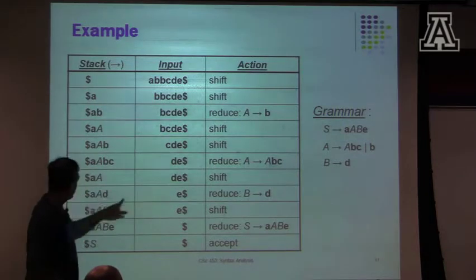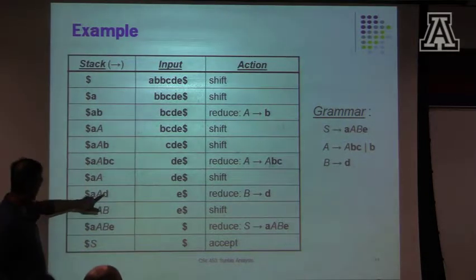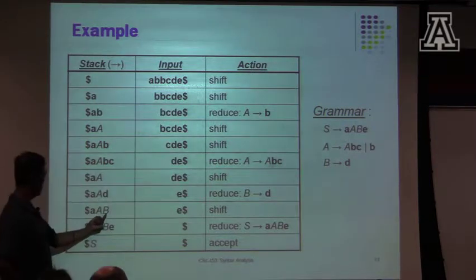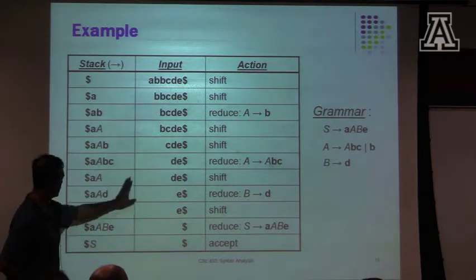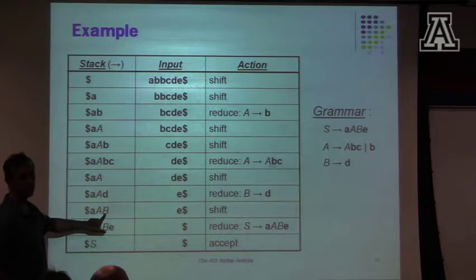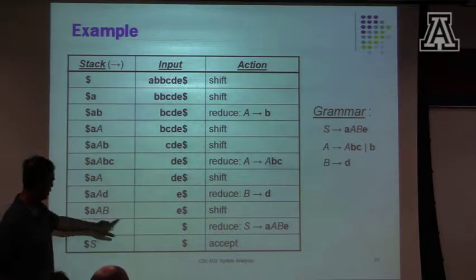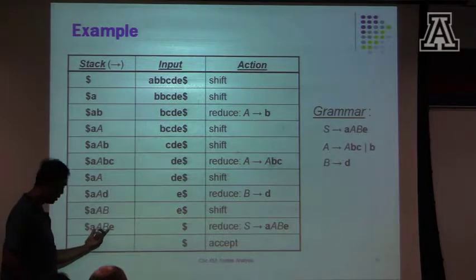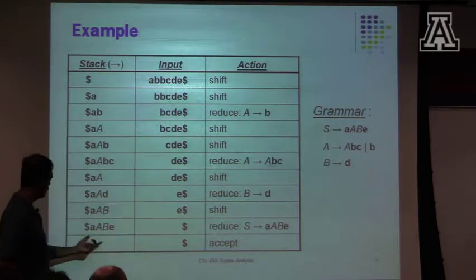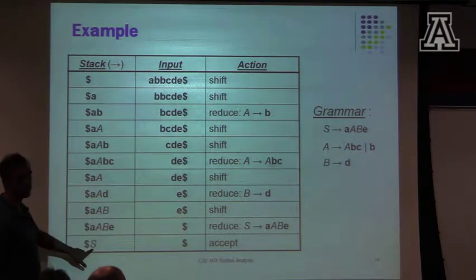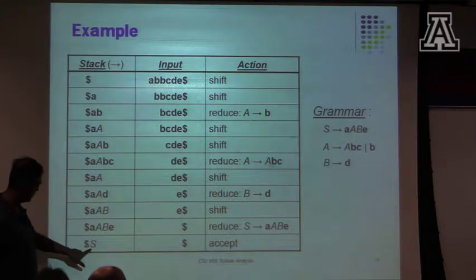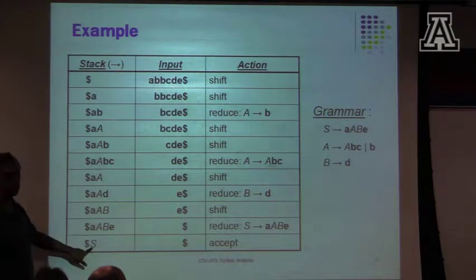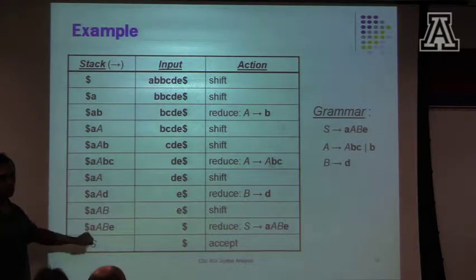So I pop those three symbols off the stack. What's left is little A, and then I push the left-hand side of the production. Then I do a shift. After the shift, there's a reduce with B goes to D. That pops the D off the stack and pushes the left-hand side of the production B. Then I do a shift, and this whole thing gets popped off, and I push the left-hand side of the production S. At this point I've consumed all input and I have the start symbol on the stack — so this is good.